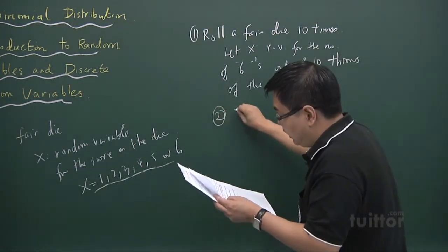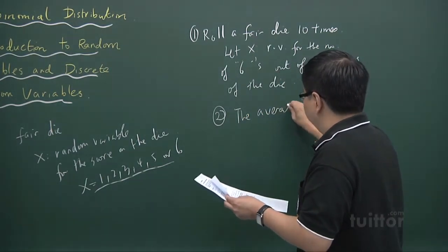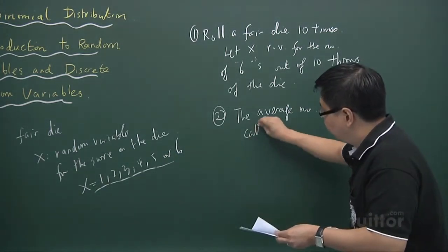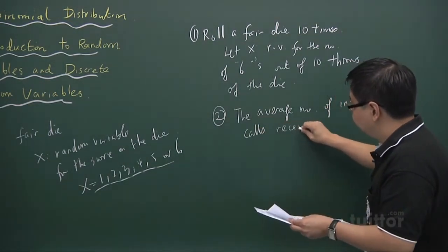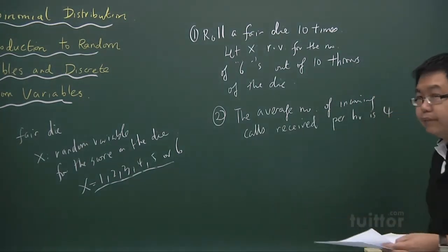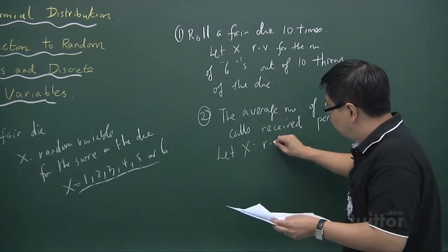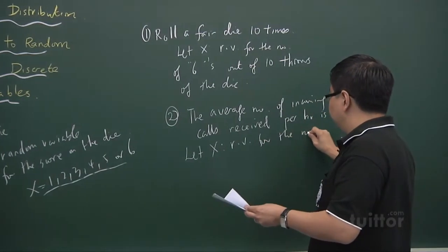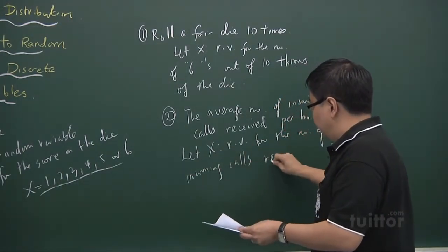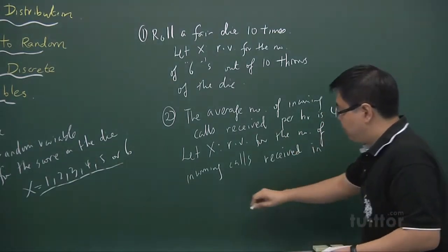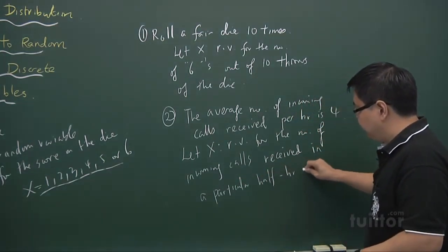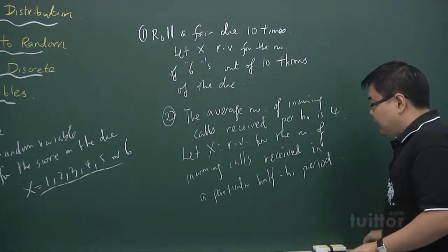Another example could be that the average number of incoming calls, for example, calls received per hour is 4. And if we let x to be the random variable for the number of incoming calls received in a particular half hour period.